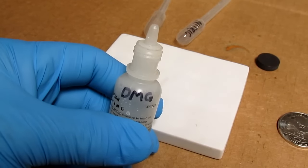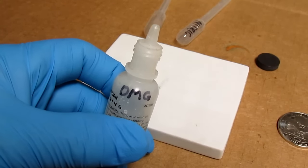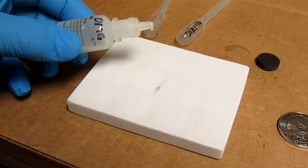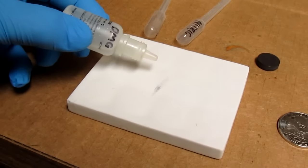Here I have a solution of dimethylgloxene which is also known as DMG. When I add a drop of this, if we got nickel in solution then it'll turn bright pink.